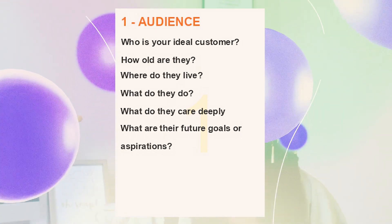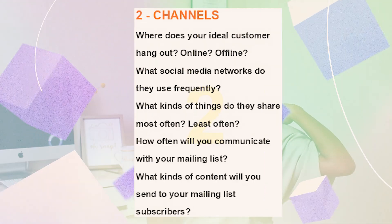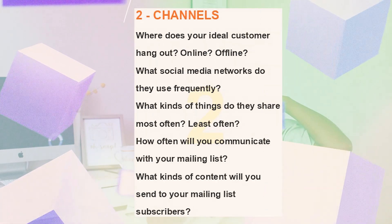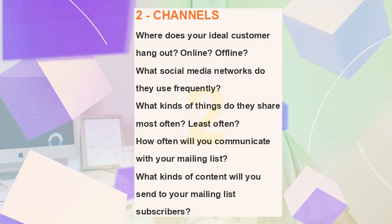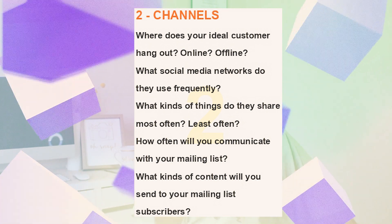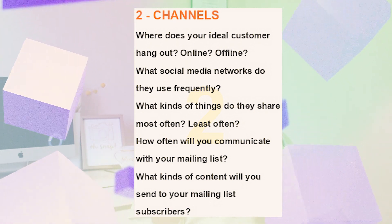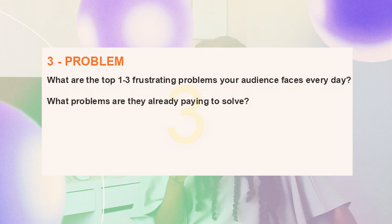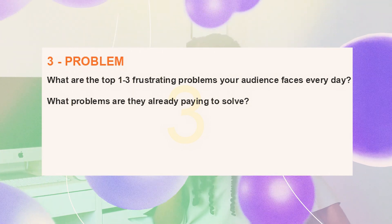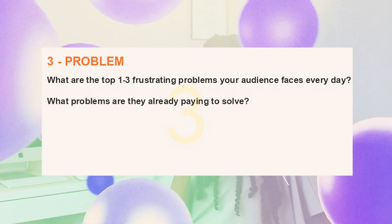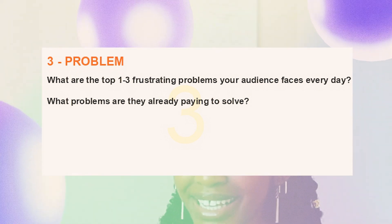Number one is your audience — who is your target customer, who is your ideal customer? Number two is your channels — where does your ideal customer hang out? Are they online or offline? What social media networks do they use frequently? What kinds of things do they share most or least about? Number three is problem — what are the top one to three frustrating problems your audience faces every day, or problems they are already paying to solve?